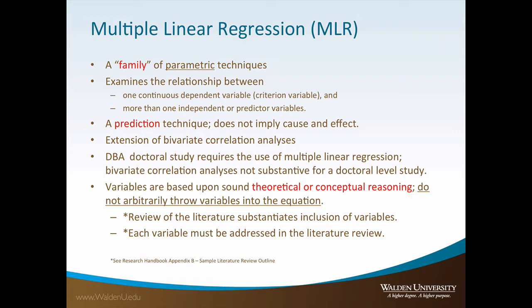All doctoral studies using multiple linear regression require the use of multiple independent variables. Bivariate correlation analyses are not sufficient for a doctoral level study. The variables used in multiple linear regression must be based upon sound theoretical or conceptual reasoning — one does not arbitrarily throw variables into the equation. The review of the literature substantiates the inclusion of variables, and each variable included in the analysis must be addressed in the review of the literature. There is an excellent example depicting this concept in Appendix B of the research handbook.